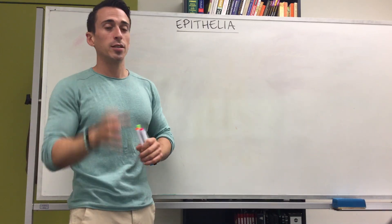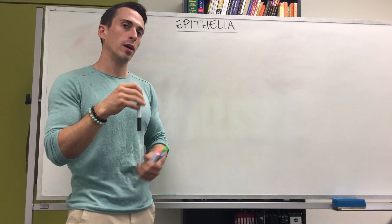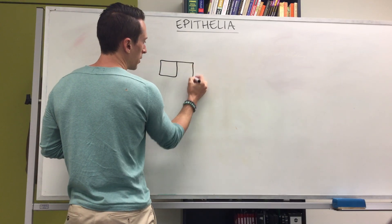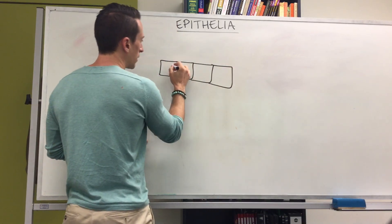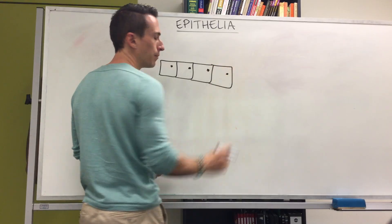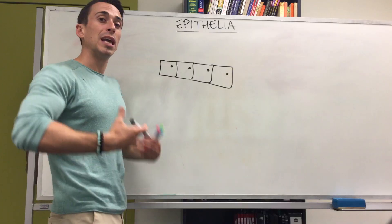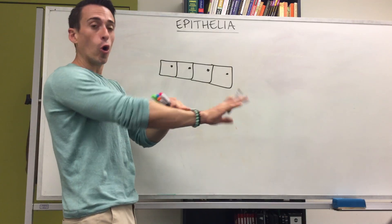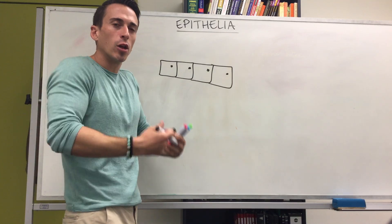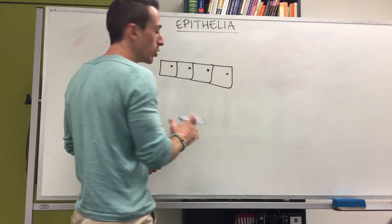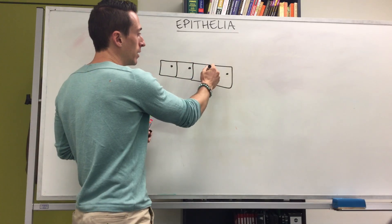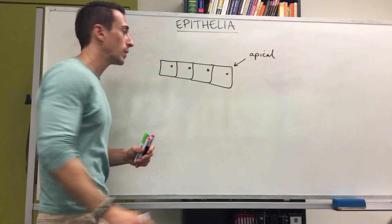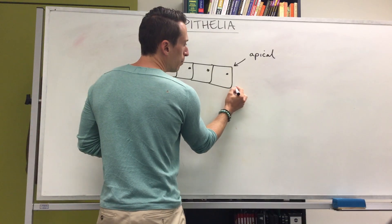Epithelia come in different shapes and sizes and the next video will focus on those. Here is a simplified version of epithelial tissue. You have simple cells — epithelial cells — and these cells have a nucleus. The cells exposed to the environment, whether that be the external environment at the top, or the internal environment such as the hollow inside of the GI tract or urethra, always have one part exposed to that environment. That exposed part is called the apical side. You also have the side not exposed to the environment, which is called the basal side.